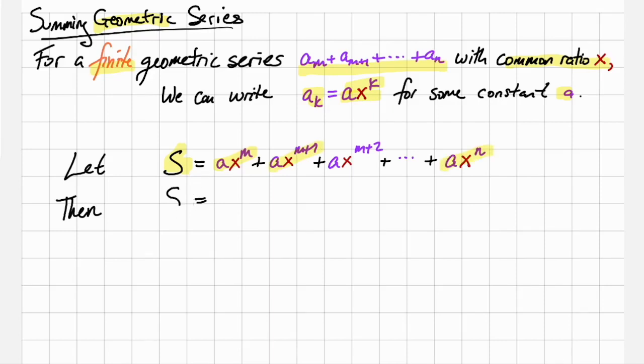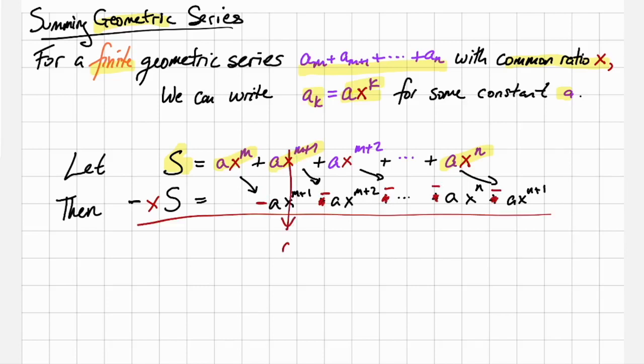If we write that as S, and then we multiply by x, then what we get is the same series shifted one term over. So now if we take S, and we take away the xS, all these plus signs become minus signs.